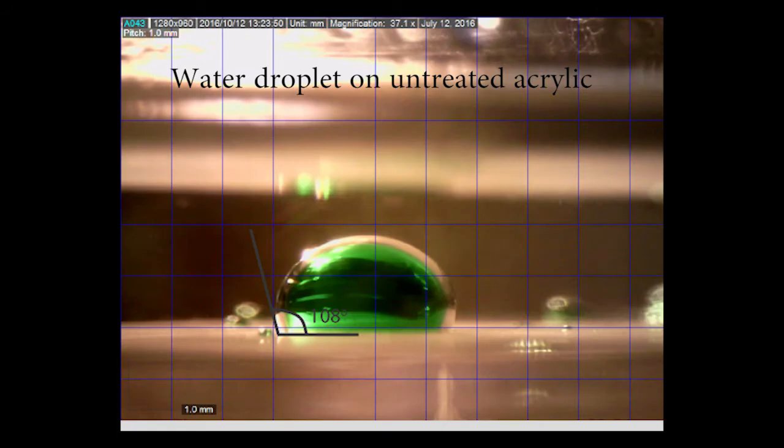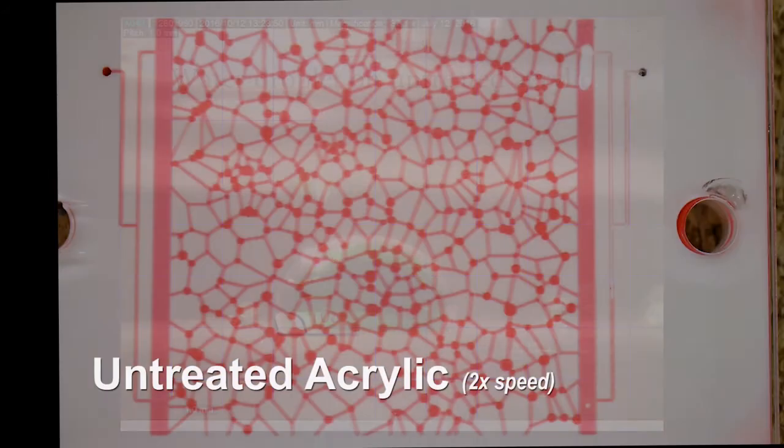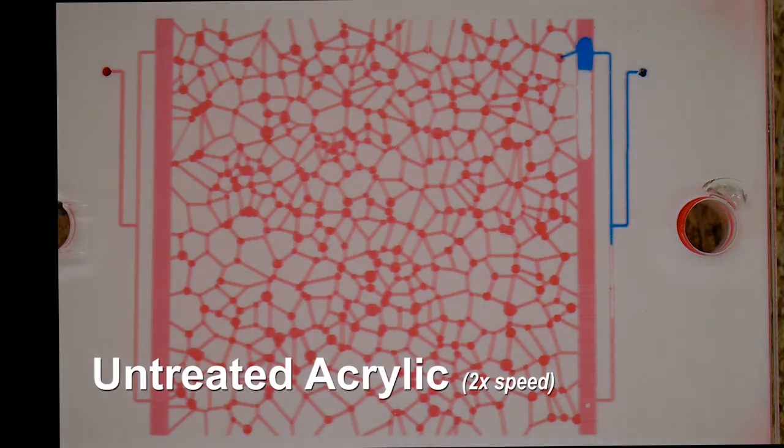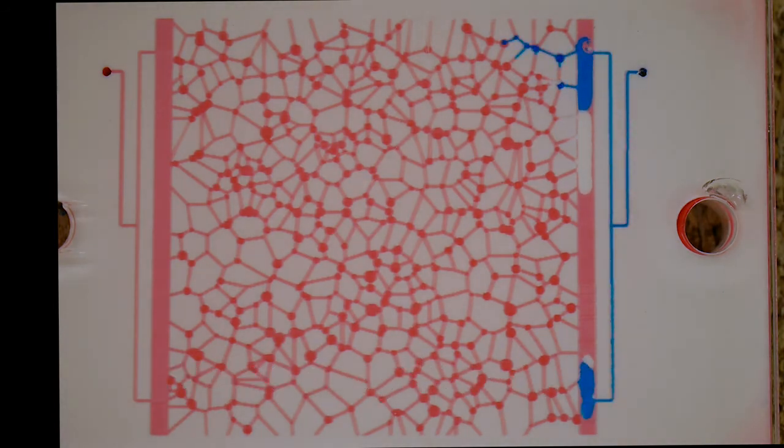The first is an untreated acrylic surface. In this photo, the green droplet is water and it is surrounded by oil. The contact angle is 108 degrees. This means the oil is slightly more attracted to the surface than water, called oilophilic.